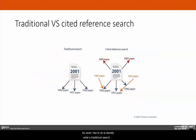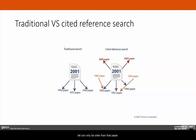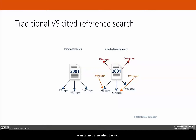With a traditional search, we often find a great paper, flip to the back, and look at the reference list. Of course, the reference list can only be older than that paper, but it's a very good method to find other relevant papers.